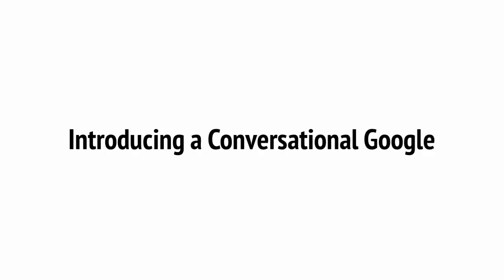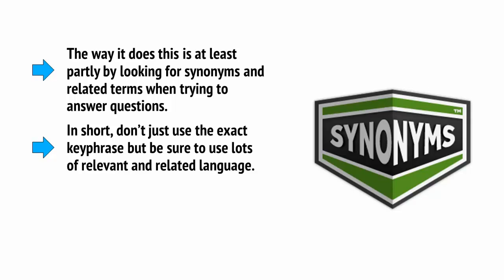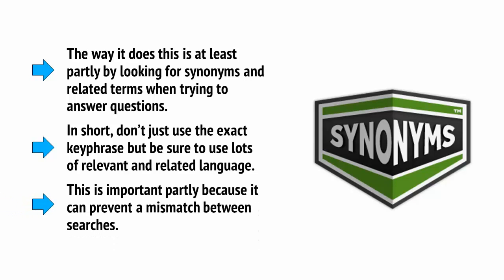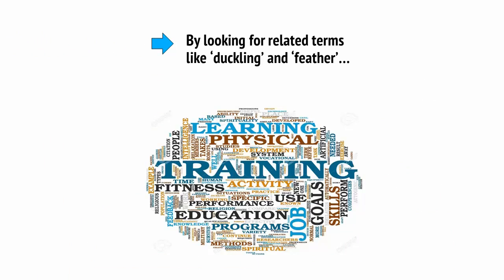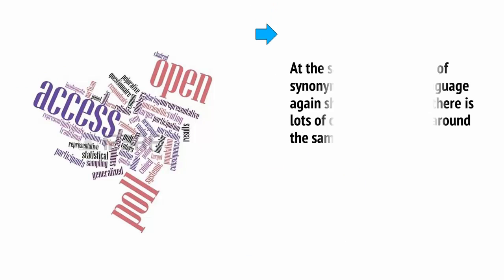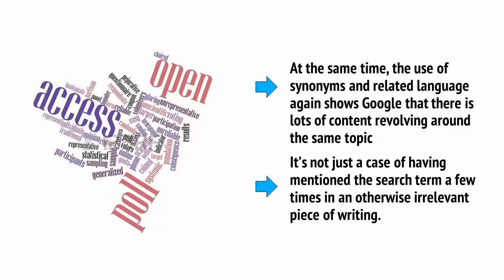You also need to consider something called LSI, or latent semantic indexing. This is basically a fancy term for how Google now understands actual meaning rather than just matching words. It does this partly by looking for synonyms and related terms when trying to answer questions. Don't just use the exact keyphrase — use lots of relevant and related language. This is important partly because it can prevent a mismatch between searches. If someone searches for a homonym like 'duck,' Google determines whether they mean the bird or the movement by looking for related terms like 'duckling' and 'feather,' or perhaps 'dodge' and 'dive.' Using synonyms and related language shows Google there is a lot of content revolving around the same topic, not just a case of having mentioned the search term a few times in an otherwise irrelevant piece of writing.